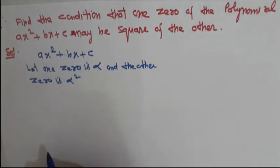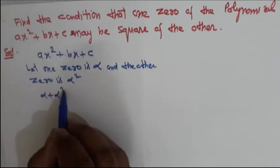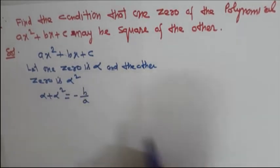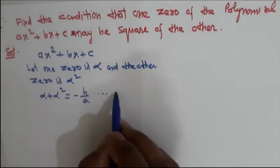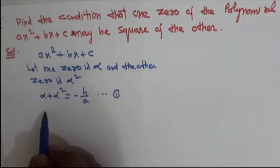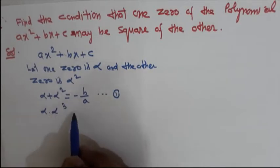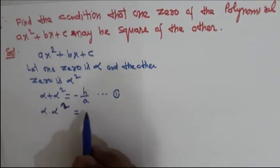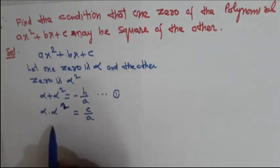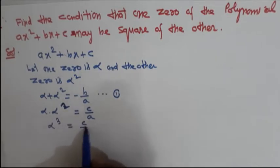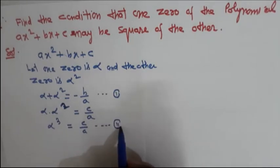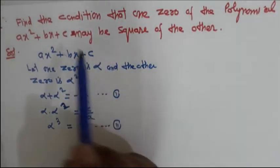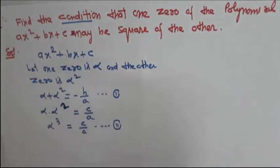Sum of zeros: alpha + alpha² = -b/a — let this be equation number 1. Product of zeros: alpha × alpha² = alpha³ = c/a — let this be equation number 2. We have to find out the condition, meaning we need to find a relation between A, B, and C only — no alpha should remain in the answer.